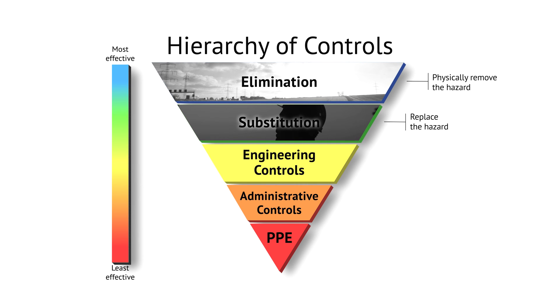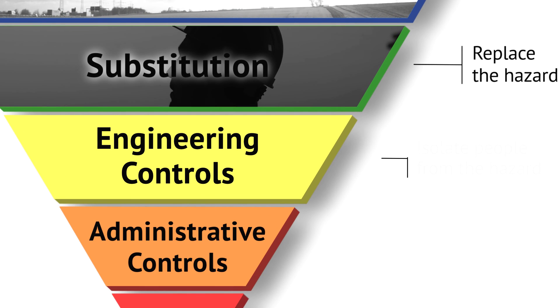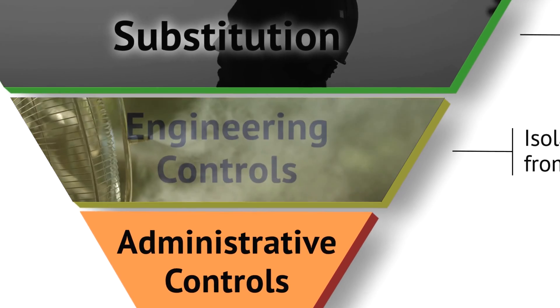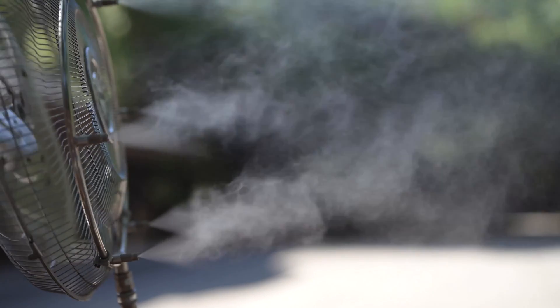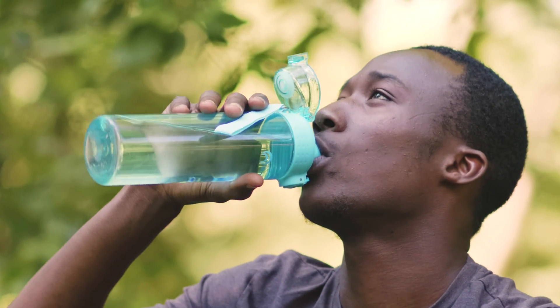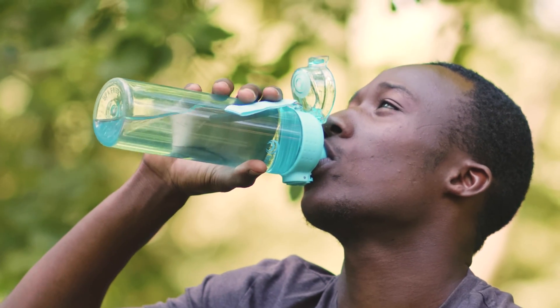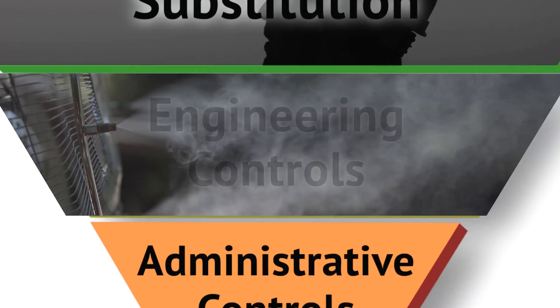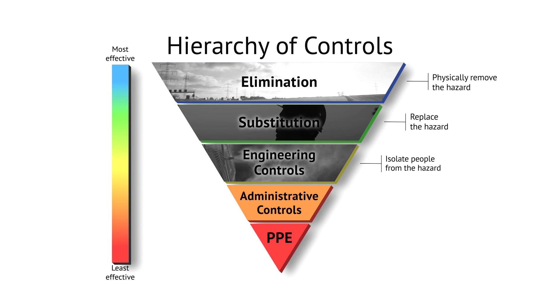Engineering controls might include using a fan where electricity is available. Fans can remove heat from an environment, and placing them in a shaded area creates a cooling station where employees can drink water slowly and rehydrate.